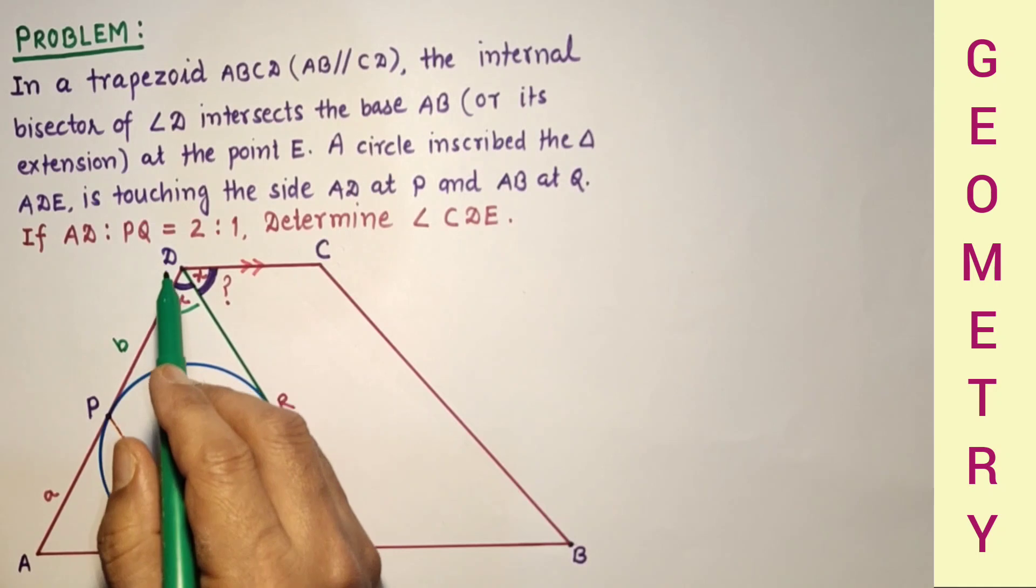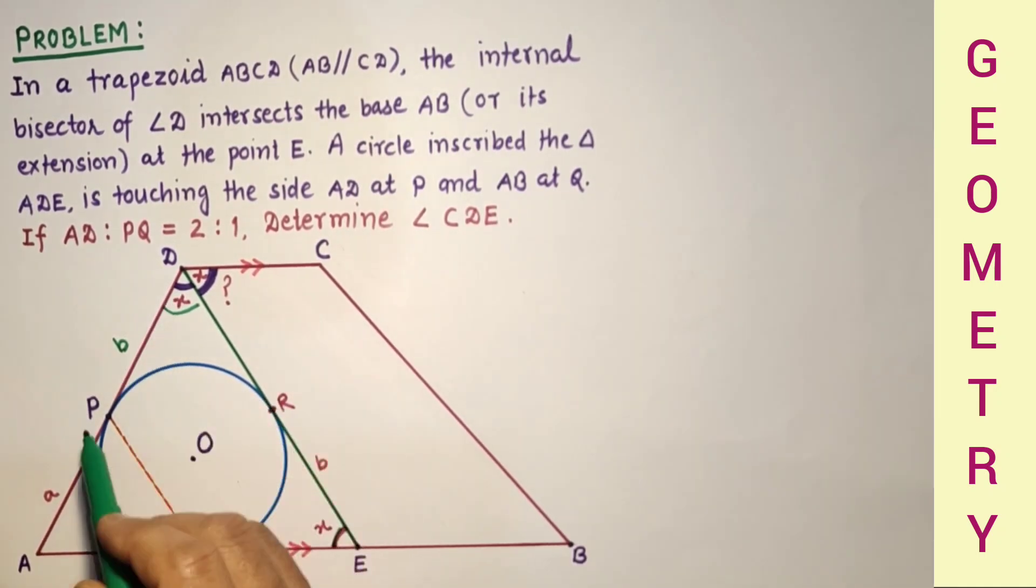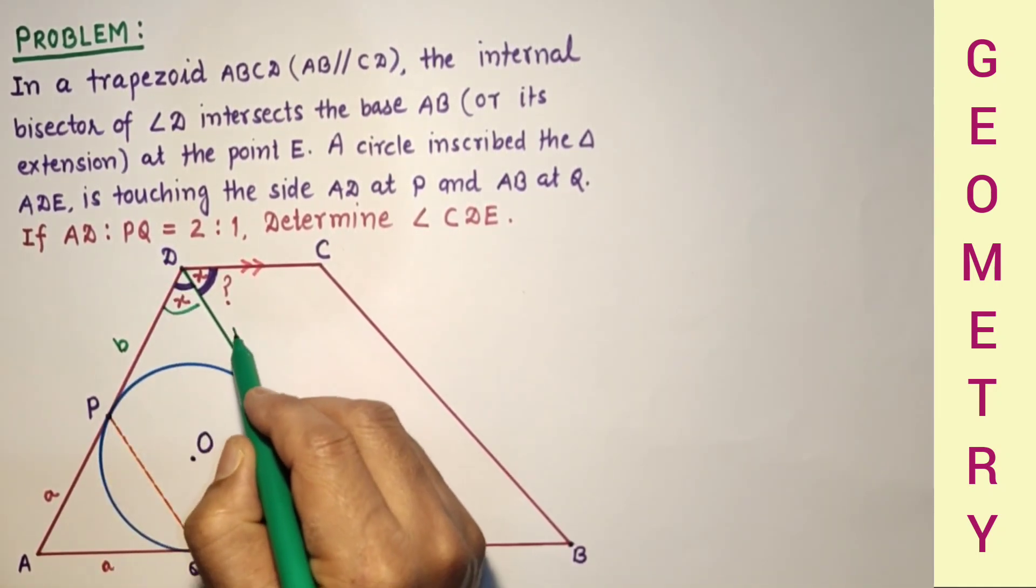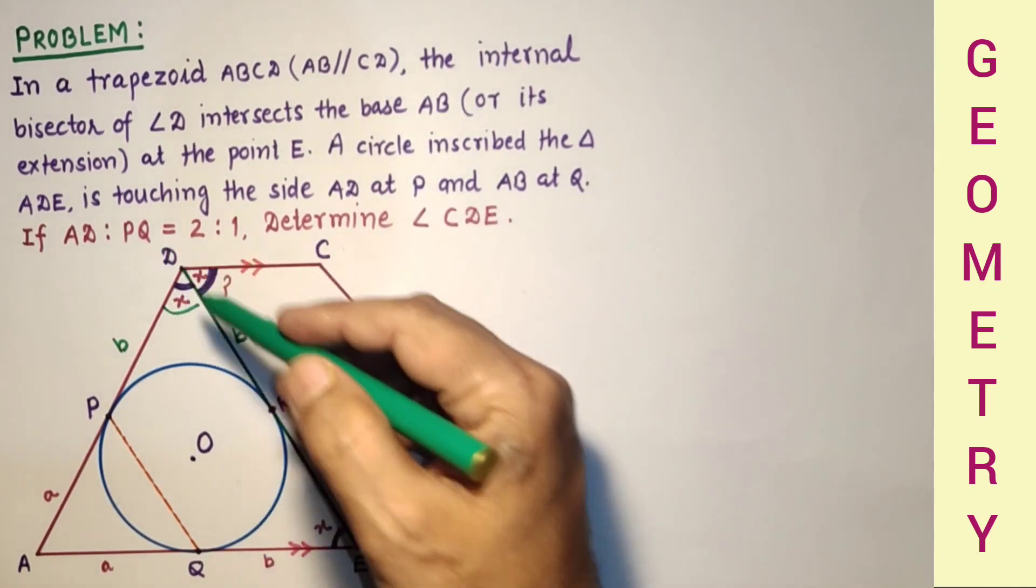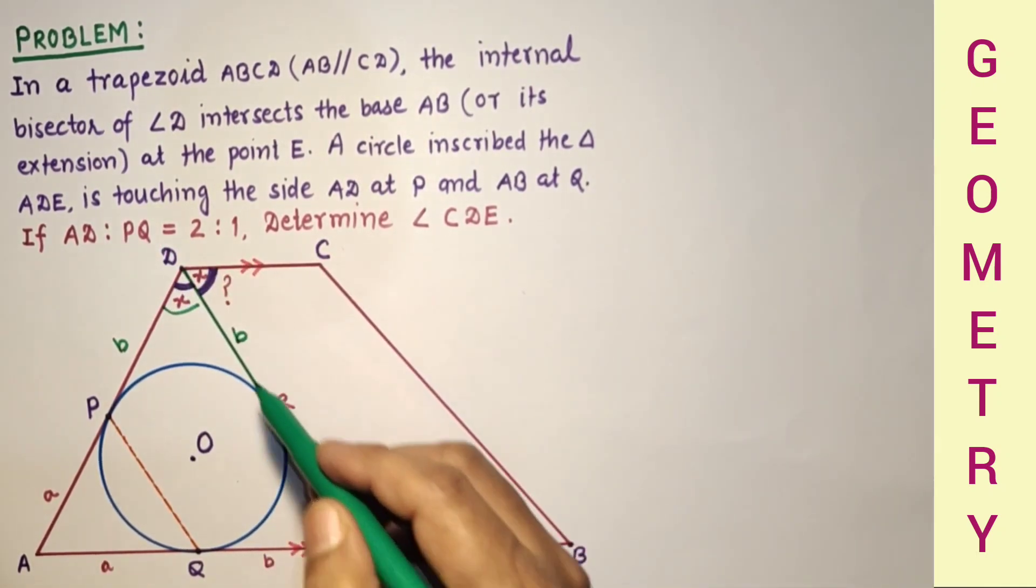AE is A plus B and also AD is A plus B. Because DP is equal to DR, and DP is B, therefore DR will also be B. So R is the midpoint of DE because this is B and this is B.